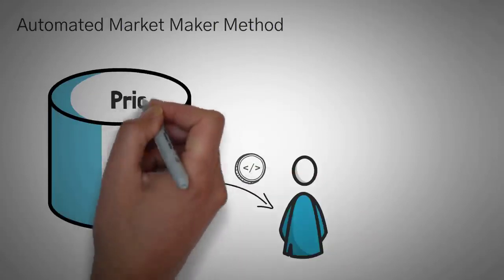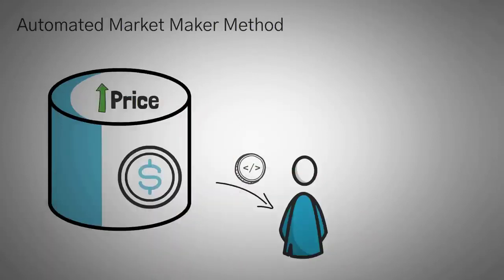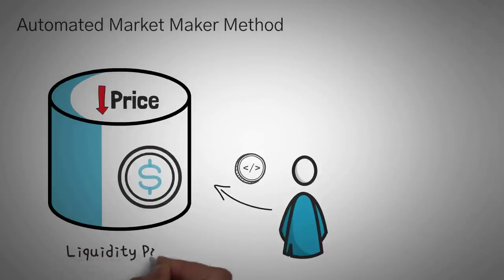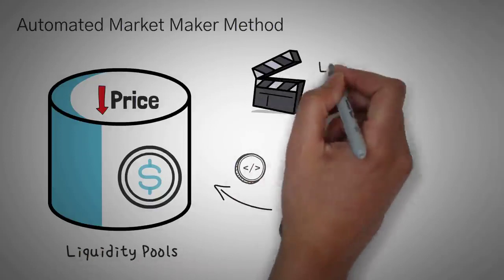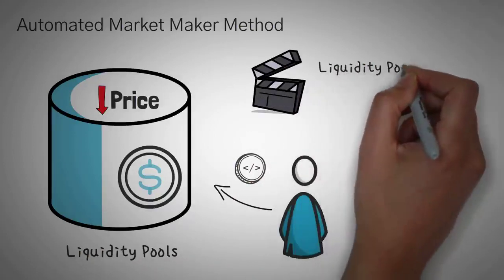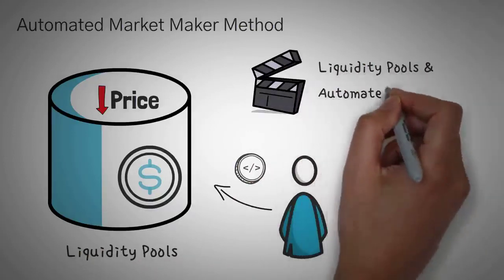Each token that you buy, the pool of funds gradually charges you more and more. And each token that you sell to it, it gradually gives you less and less. Now, these pools are actually called liquidity pools. And we have two great videos on how they work: liquidity pools and automated market makers.